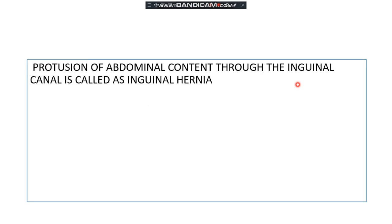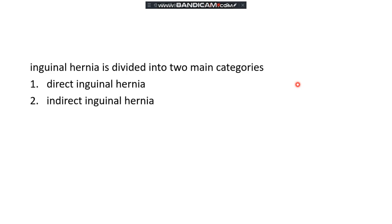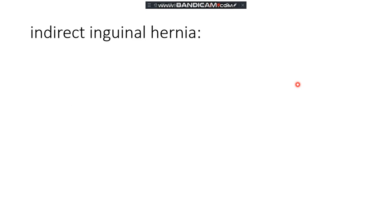Now, what happens in inguinal hernia? When there is protrusion of abdominal content through the inguinal canal, it is called inguinal hernia. As discussed previously, it can be omentocele, enterocele, a part of bladder, or a part of ovary. Inguinal hernia is further divided into two main categories: direct inguinal hernia and indirect inguinal hernia.